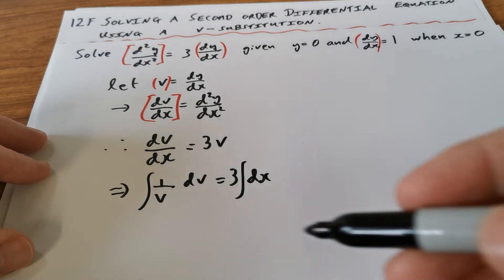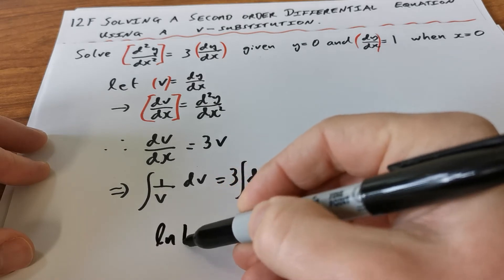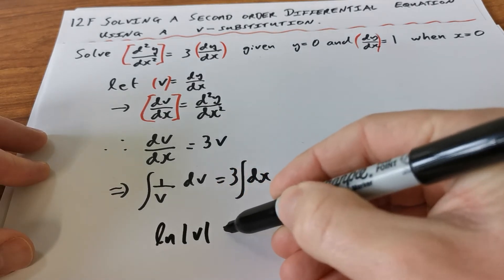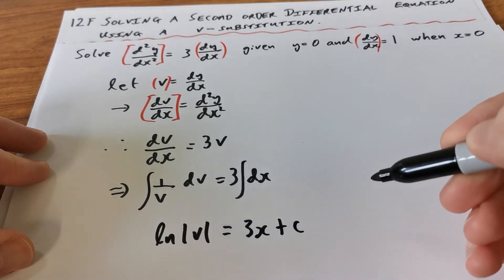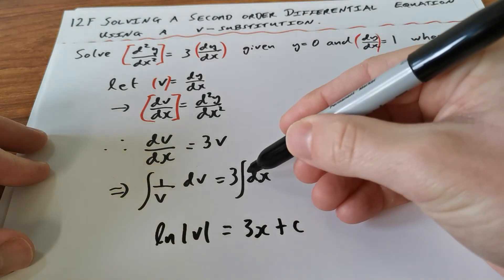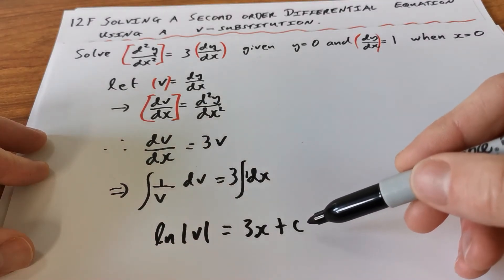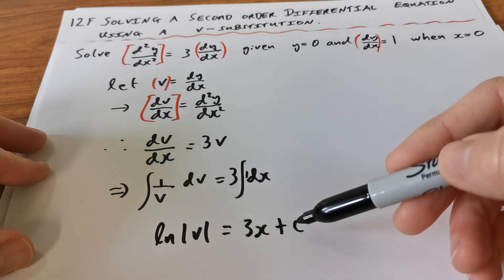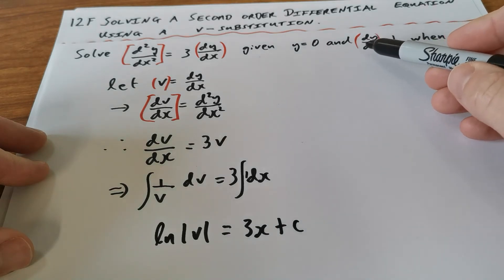Taking the anti-derivatives: on the left-hand side the anti-derivative of 1/V is the natural log of |V|, and on the right-hand side this becomes 3x + c. That's 3 times the anti-derivative of 1 with respect to x. So we get ln|V| = 3x + c. This is a general solution, and now I want to think about solving for c.